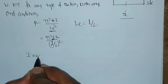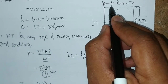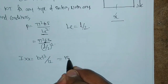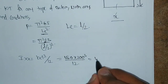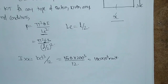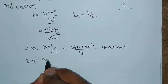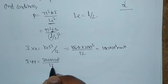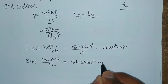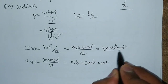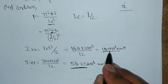First, throughout x-x axis: Ixx = bd³/12 = 150 mm into 200 cubed divided by 12. Calculating gives 100 into 10 to the power of 6 mm to the power 4. Next, throughout y-y axis: Iyy = 200 into 150 cubed divided by 12. Calculating gives 56.25 into 10 to the power of 6 mm to the power 4. Comparing both values, the Iyy value is less than Ixx.